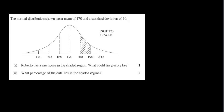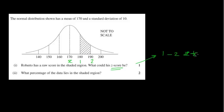Last one: the normal distribution shown has a mean of 170 and a standard deviation of 10. They've already drawn the bell curve for you. Roberto has a raw score in the shaded region — what could his score be, and what could his Z score be? This is one standard deviation, this is two standard deviations. So any answer between one and two Z scores will give you an answer — so 1.5, 1.2, 1.3 — any Z score between one and two will give you an answer there, because you can see it's between one and two.